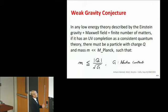Here is a statement. Suppose somebody gives you a low-energy effective theory described by Einstein gravity, plus some Maxwell field and finite number of matter fields. Then it can be embedded in consistent UV theory if this low-energy theory contains a particle of charge Q with mass much less than Planck scale satisfying this inequality, where G is Newton constant.